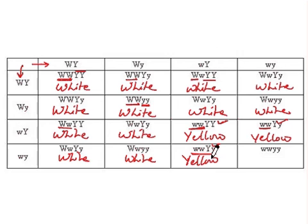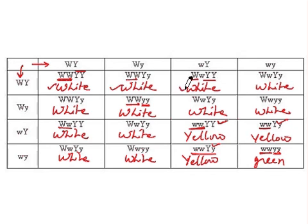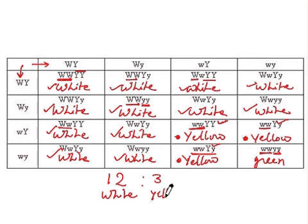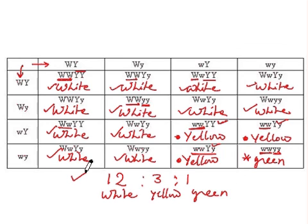Coming to the last situation: the epistatic gene is also in recessive form and the hypostatic gene is also recessive. In this situation, the third fruit color — green — will be able to express itself. So the ratio we get is 12 white, 3 yellow, and 1 green. The ratio that we get in dominant epistasis is 12:3:1.